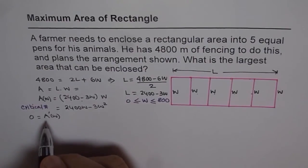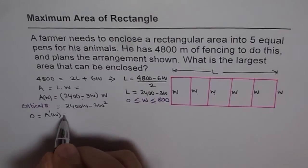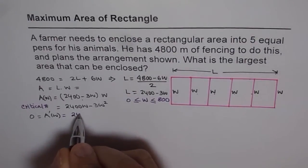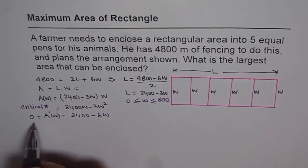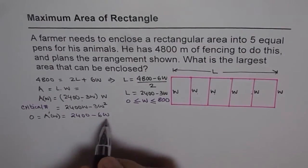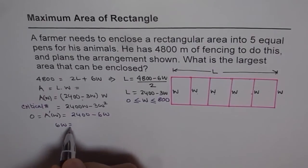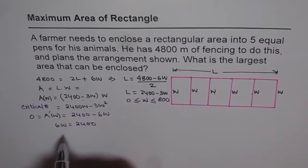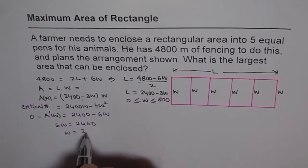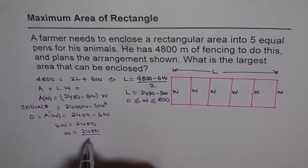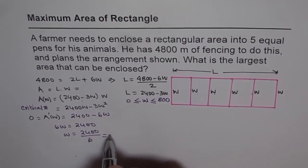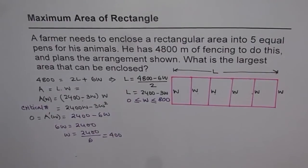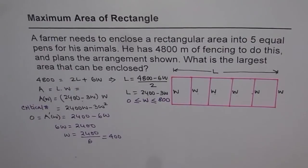Now let's find A'(W). The derivative of 2400W minus 3W squared is 2400 minus 6W. Setting that equal to zero gives 6W equals 2400, so W equals 2400 over 6, which is 400. So 400 is our critical number.